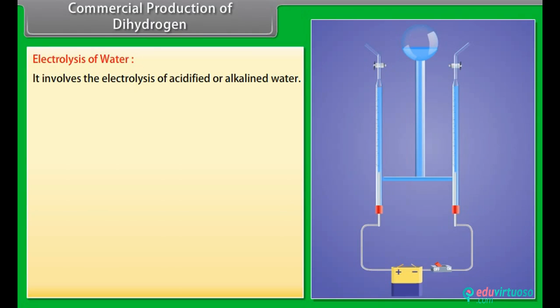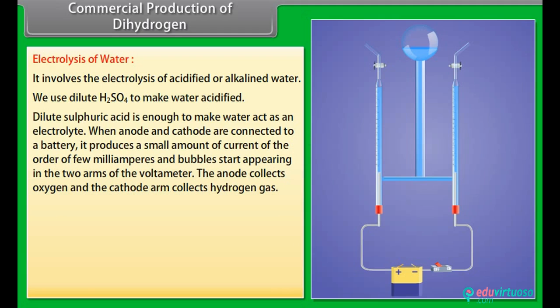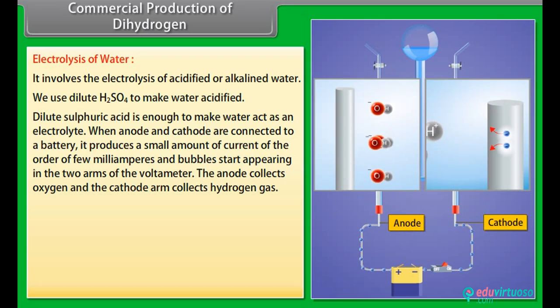Commercial production of dihydrogen. Electrolysis of water: It involves the electrolysis of acidified or alkalined water. We use dilute H2SO4 to make water acidified. Dilute sulphuric acid is enough to make water act as an electrolyte. When anode and cathode are connected to a battery, it produces a small amount of current of the order of few milliamperes and bubbles start appearing in the two arms of the voltometer. The anode collects oxygen and the cathode arm collects hydrogen gas.